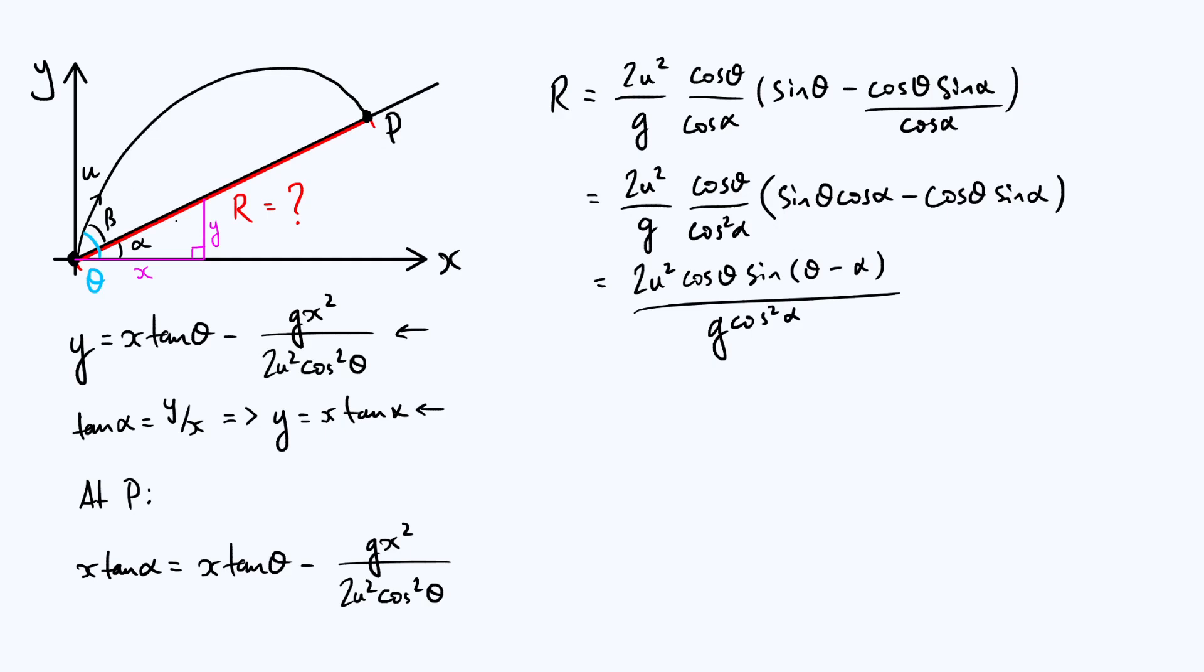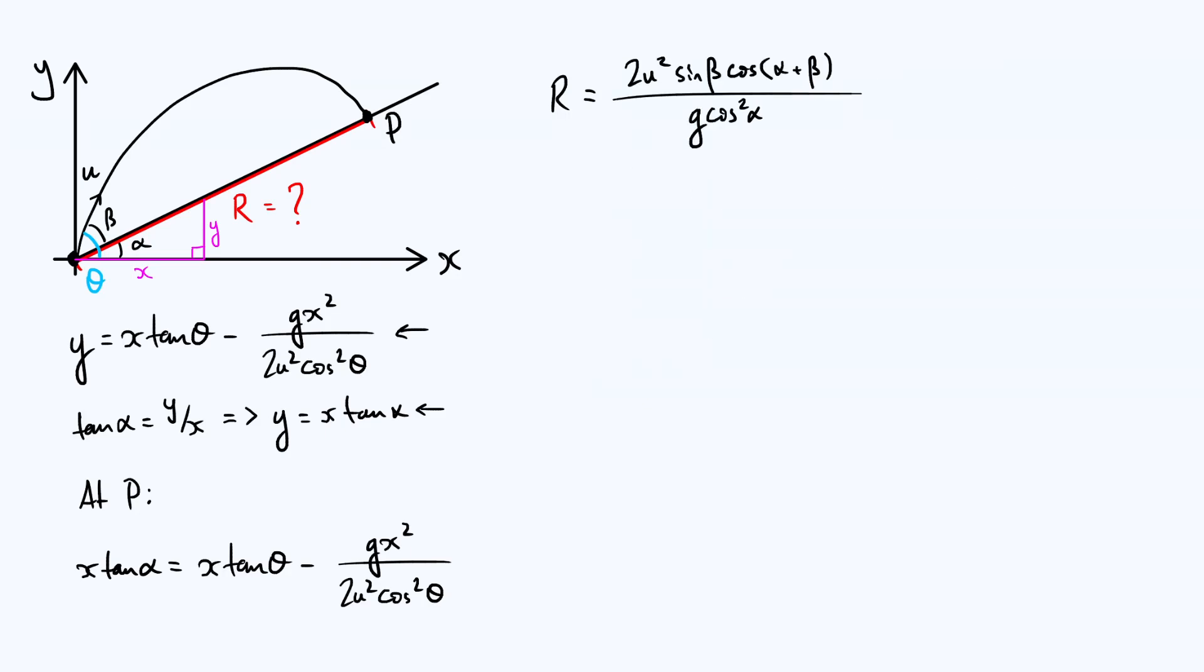But remember that the original parameters of the problem were not theta and alpha but alpha and beta. Theta was a parameter that I introduced at the beginning because it was convenient to write our equation of the parabola in terms of theta. So as a final step we better do a transformation of variables back to beta and say that beta is theta minus alpha. And then we're going to get 2u squared—well there's going to be a sine beta on top from sine of theta minus alpha. And then your cos theta is just going to be cos of alpha plus beta, and nothing changes on the denominator. It's still g cos squared alpha. So we've got our expression for r up at the top there.